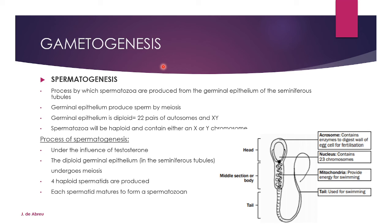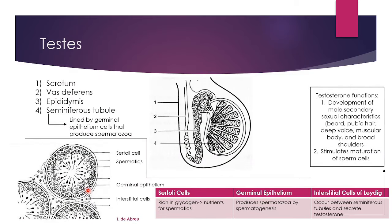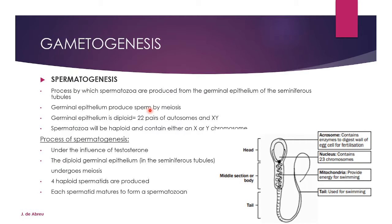Gametogenesis is the process in which gametes are made. Spermatogenesis is the process by which spermatozoa are produced from the germinal epithelium of the seminiferous tubules. The germinal epithelium produces sperm by meiosis. The germinal epithelium is diploid, with 22 pairs of autosomes and an X and Y chromosome because males have XY chromosomes. Females have XX chromosomes. Spermatozoa will be haploid and contain either an X or a Y chromosome, because when meiosis occurs, each resulting cell gets 22 chromosomes and either an X or a Y.